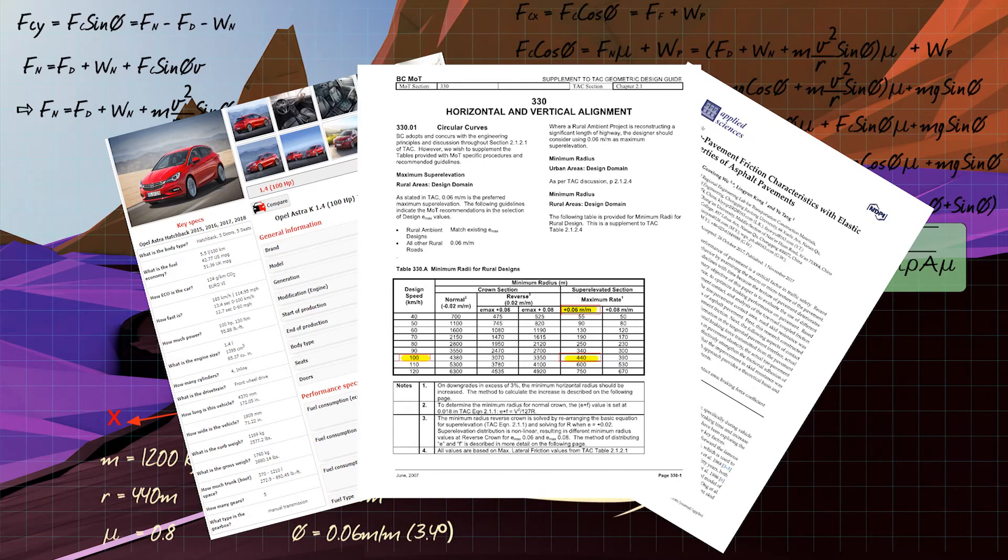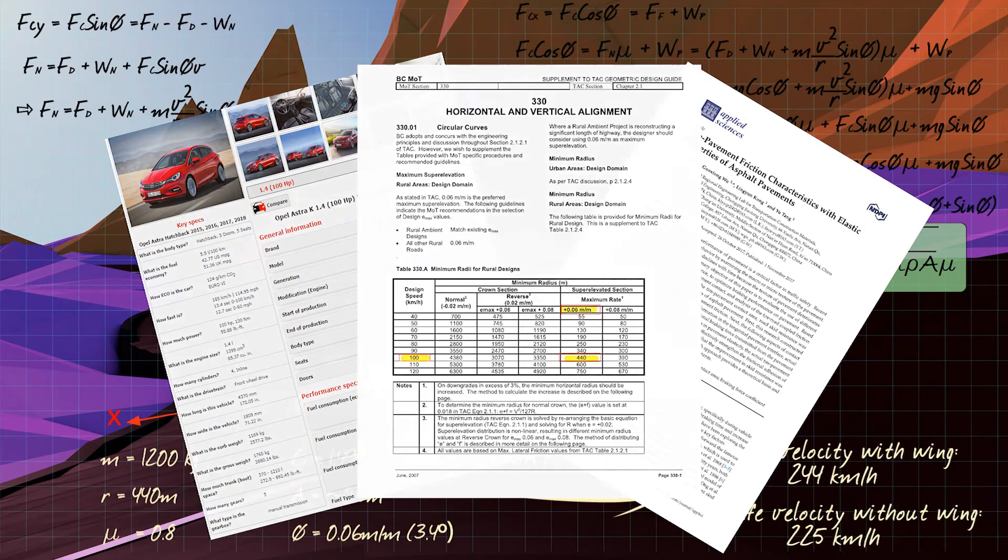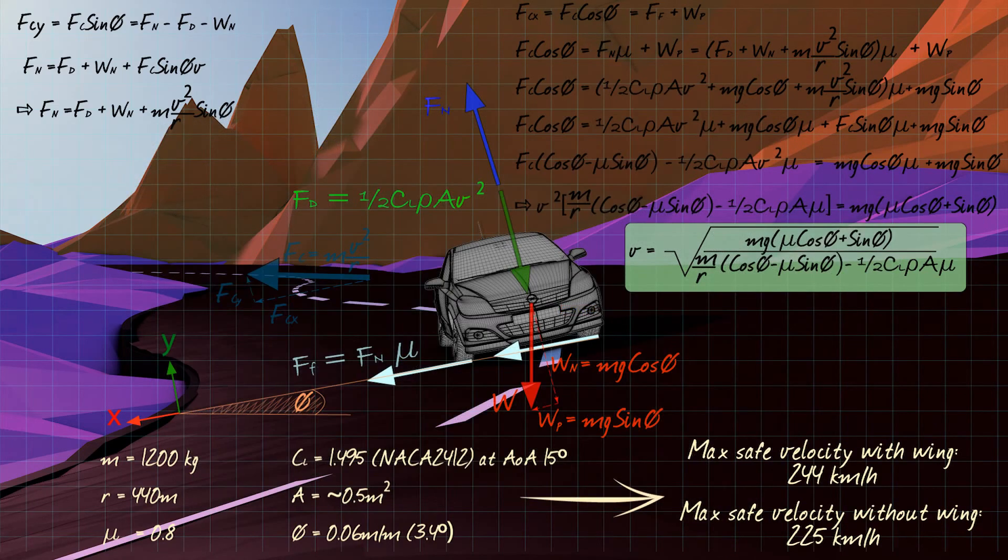Furthermore, the mass of the vehicle can be taken as 1200 kilos and the coefficient of friction at 0.8 which would represent ideal conditions. Solving for the maximum safe velocity with a wing, we get 244 km per hour compared to 225 km per hour for a case without a wing.